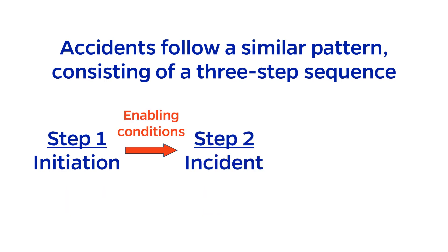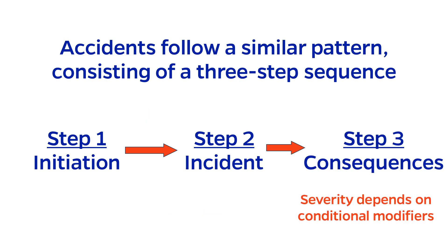In the presence of enabling conditions, an initiating event can develop and become an incident. That incident, in turn, leads to consequences, the severity of which depend on conditional modifiers, like wind speed or how many people are present.